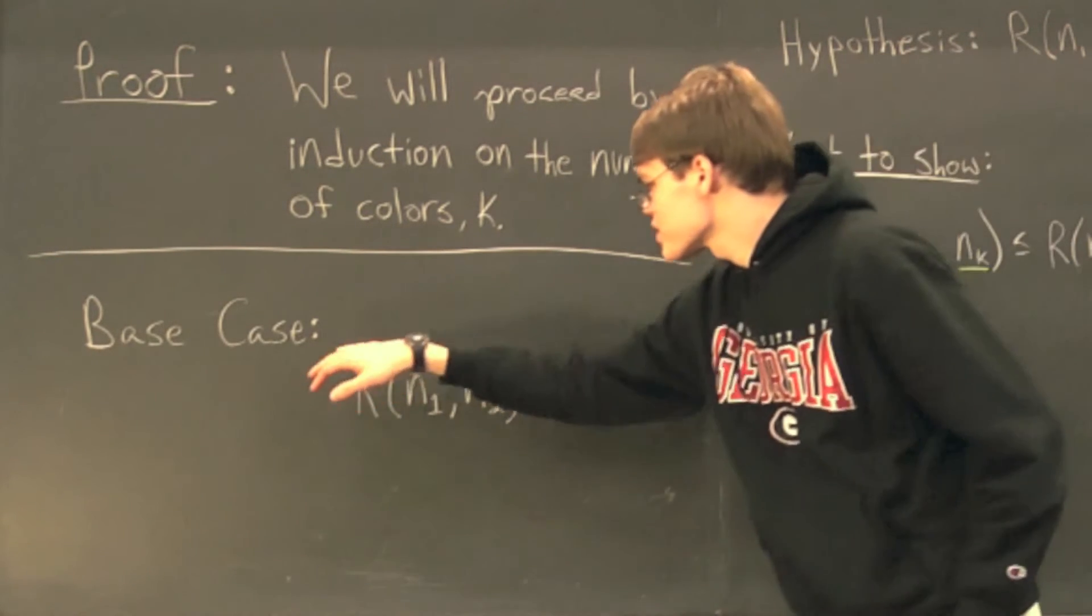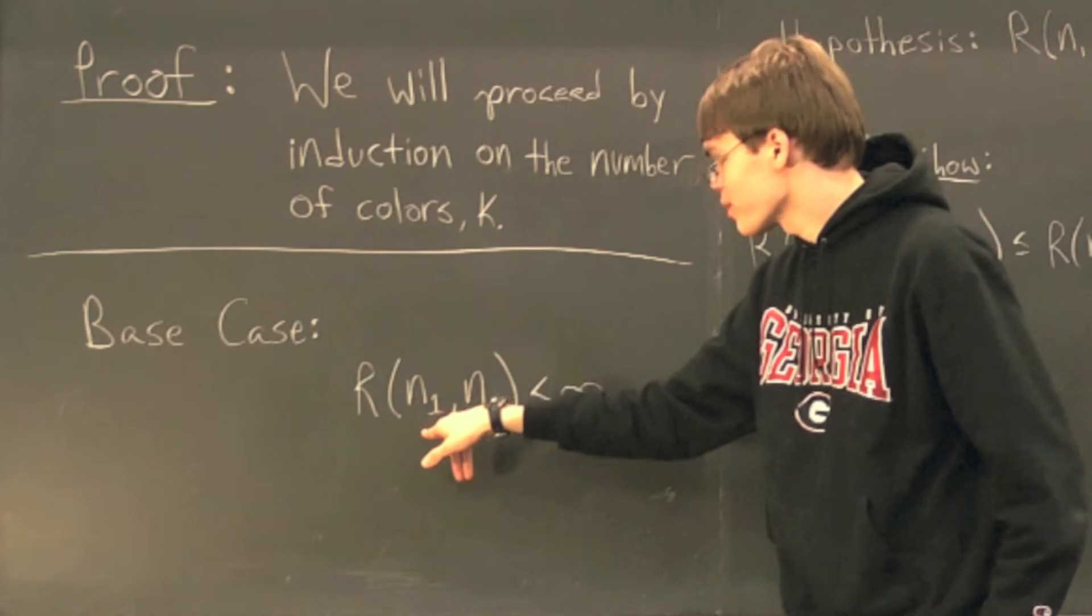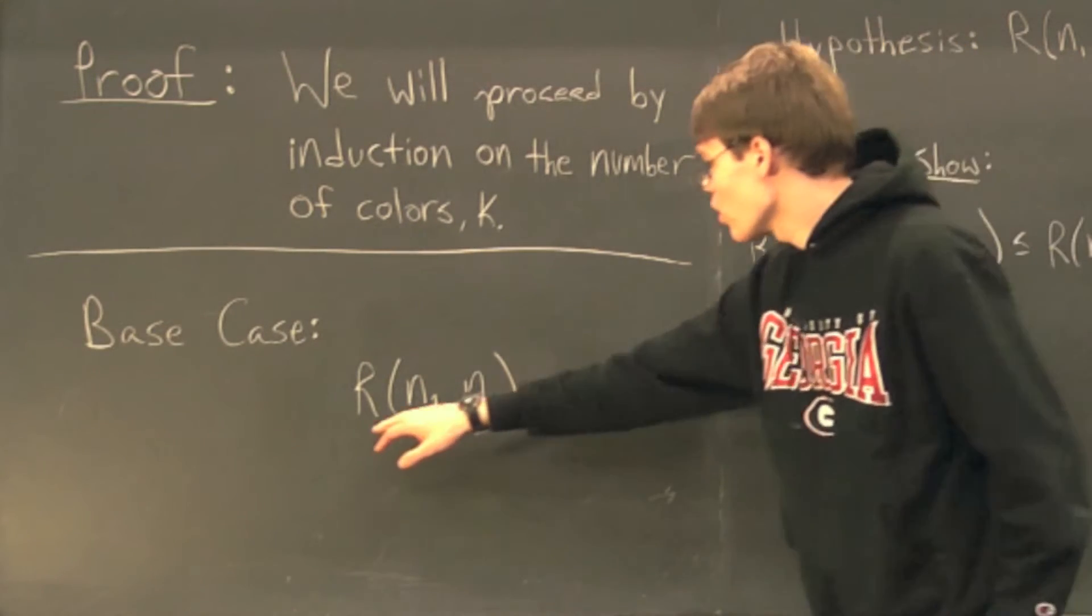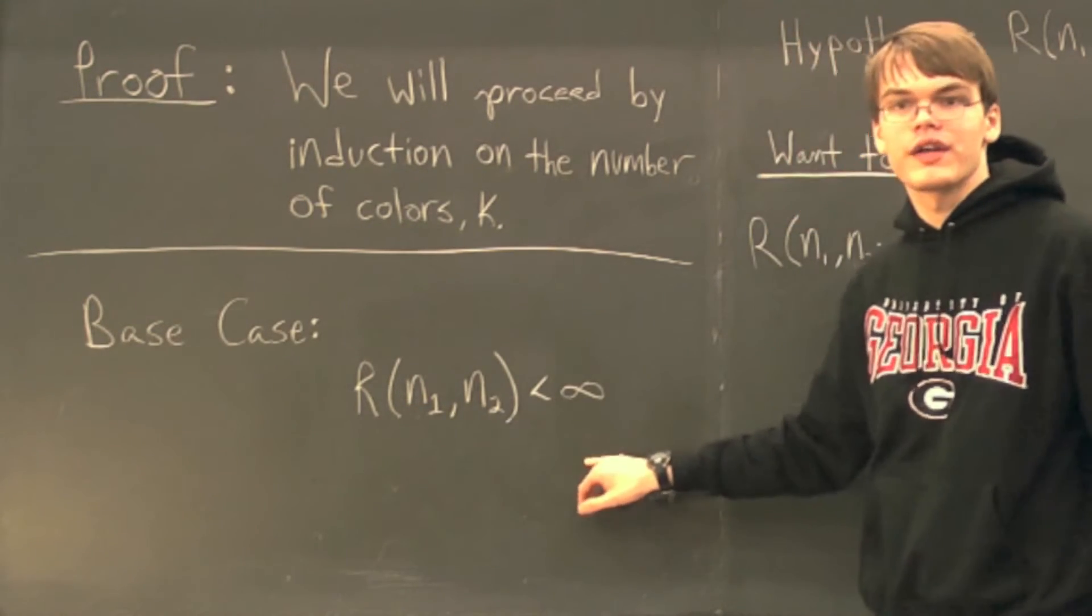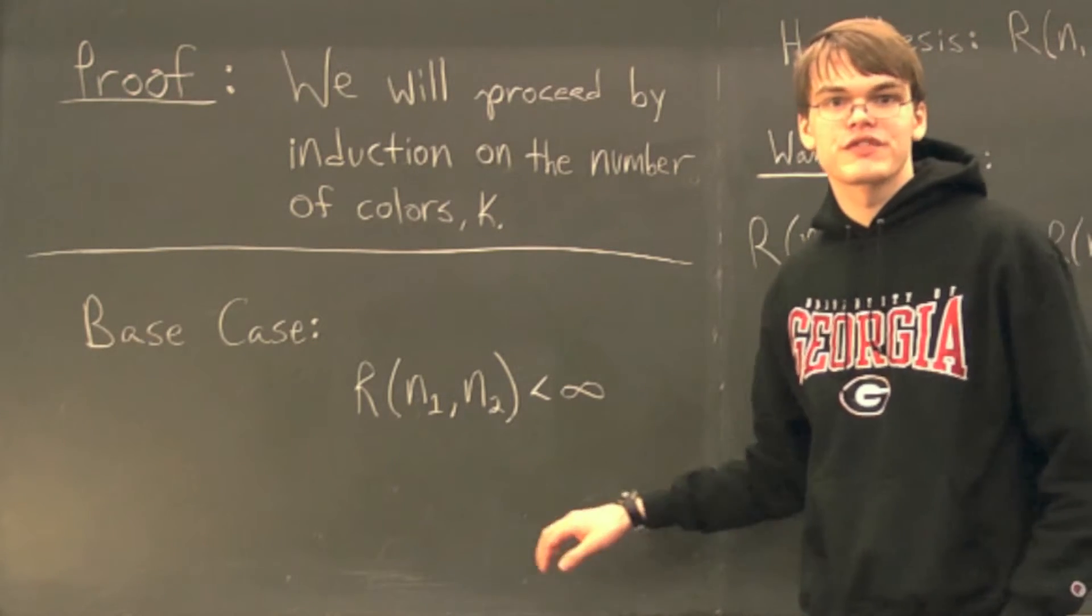Now, our base case is when we have a 2 coloring. Now, r(n₁, n₂) is finite. Just see the previous video. That's just Ramsey's theorem.